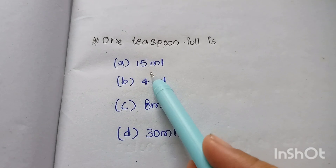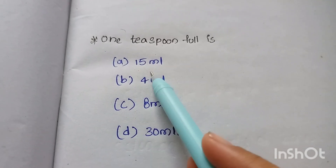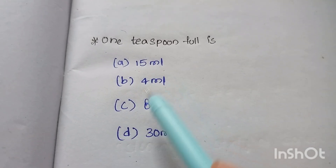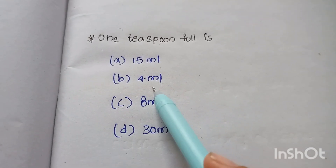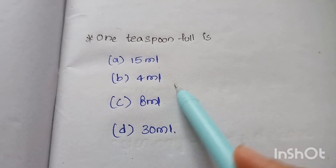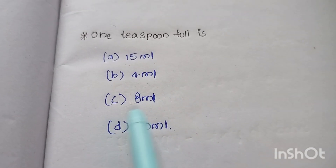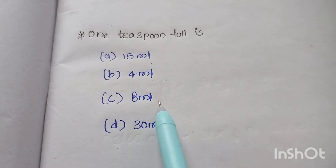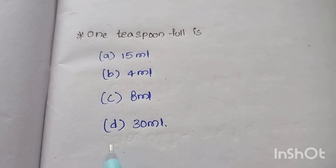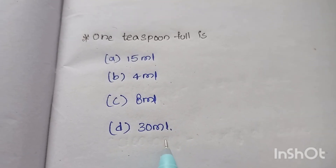The options are: Option A 15 ml, Option B 4 ml, Option C 8 ml, Option D 30 ml.